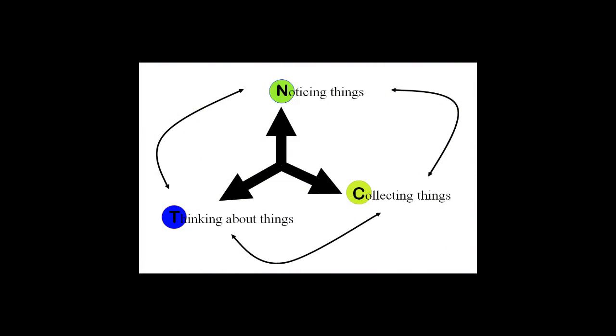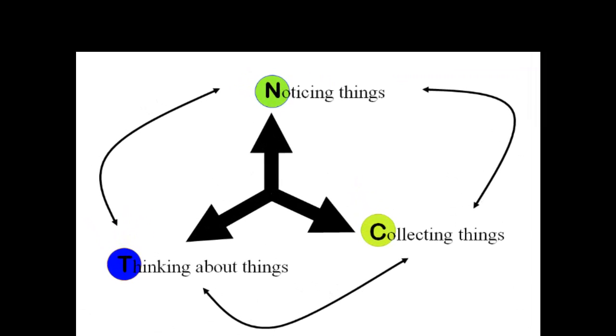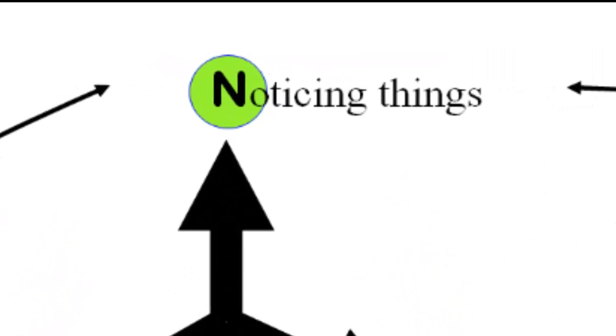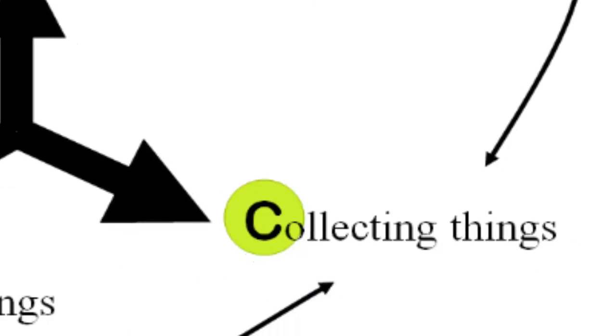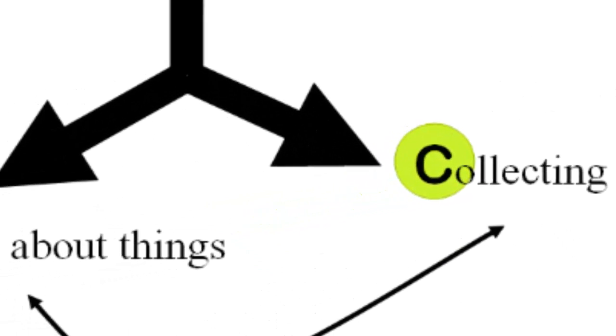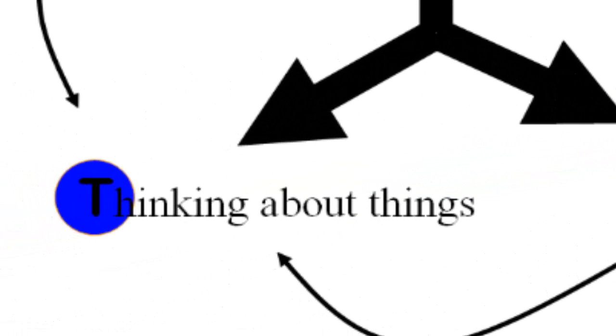Before I actually send people to begin their journey, I present this model to them, the NCT model of Computer Assisted Qualitative Data Analysis. N stands for Noticing, C for Collecting, and T for Thinking about the things you notice.